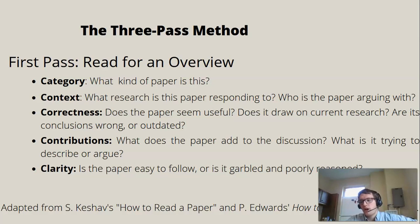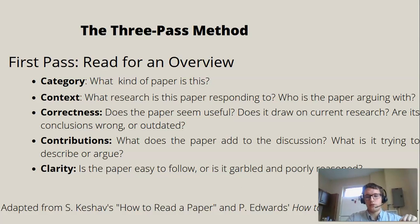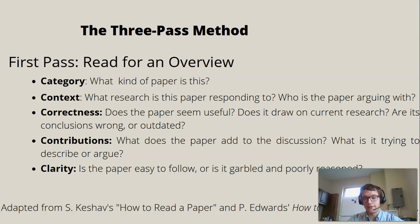Then you go for contribution: what does this paper add to the discussion, where does it go beyond current research, what is it trying to prove, what's the 'I say' part of the paper, what does this paper add that you might not get in other papers? And finally, clarity: is the paper well written, is it easy to follow? Sometimes you'll have to read an important paper that's torture to get through and use it as a source because it really is the best or only source on a particular question. But often impossibility of understanding may be a warning sign to look for different research that's a little more clear or more useful in your paper.